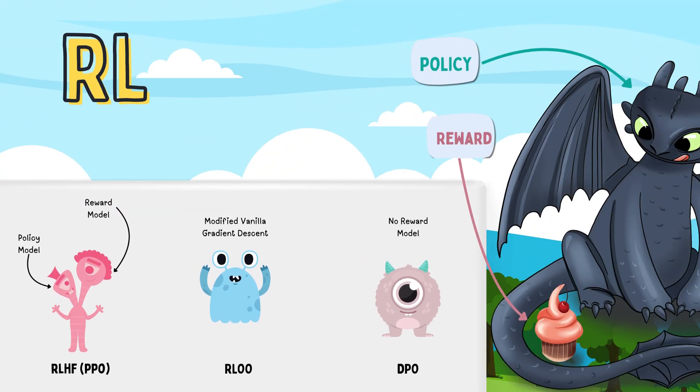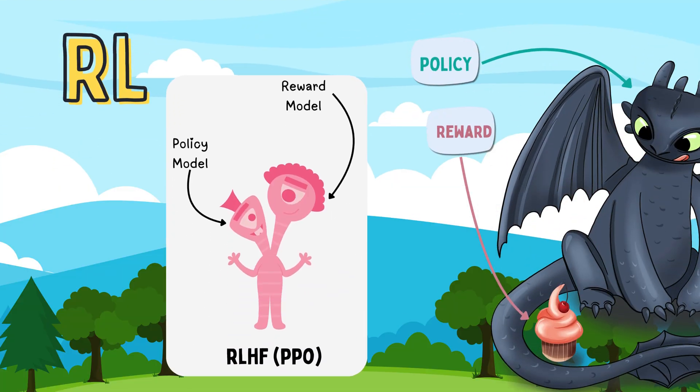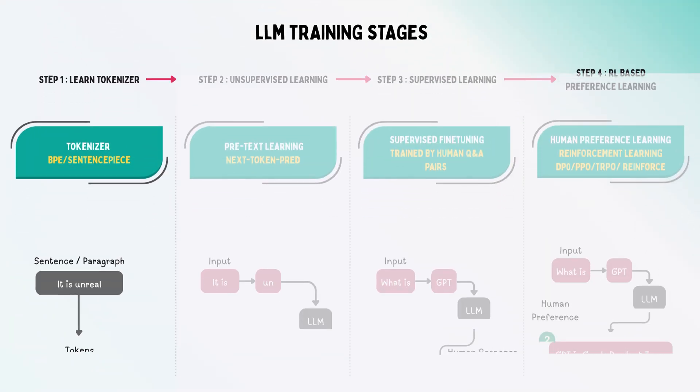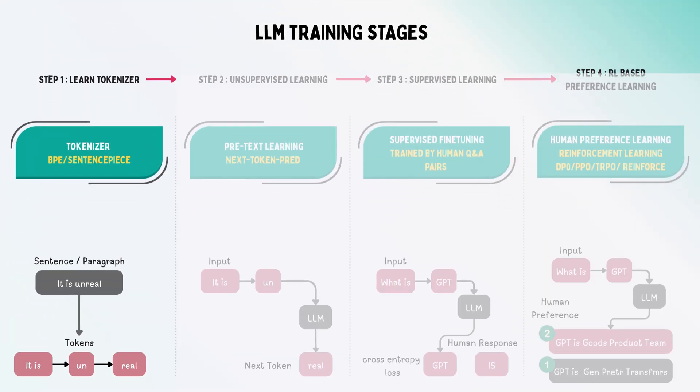In this video, we'll dig deep into RLHF, which uses Proximal Policy Optimization along with other stages of LLM training. Let's get started. The first stage in LLM training is tokenization.